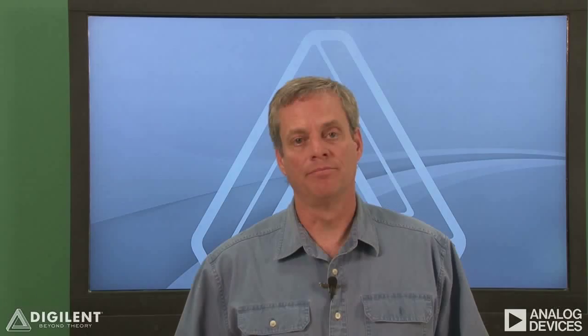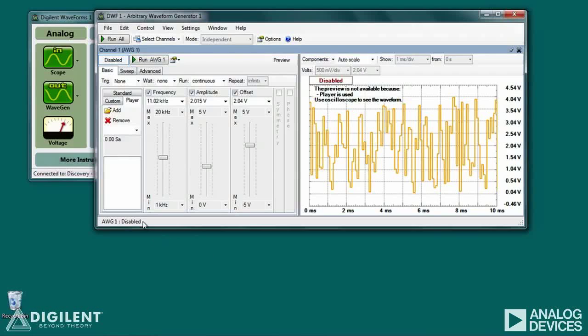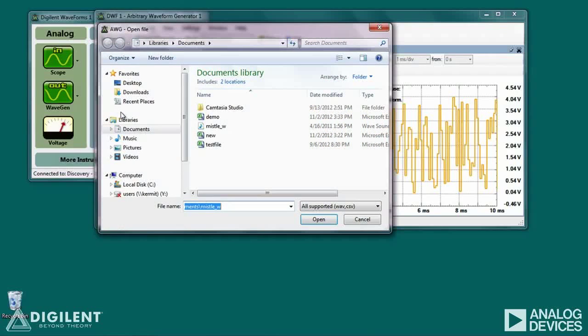Finally, we'll talk about the Player tab. This tool allows you to readily import and play a signal from a file. Specifically, WAV file formats are supported so that you can use your Analog Discovery to play audio files. In order to load a file using the Player tab, simply click on Add, navigate to the location where the file is located, select the file, and click on Open.